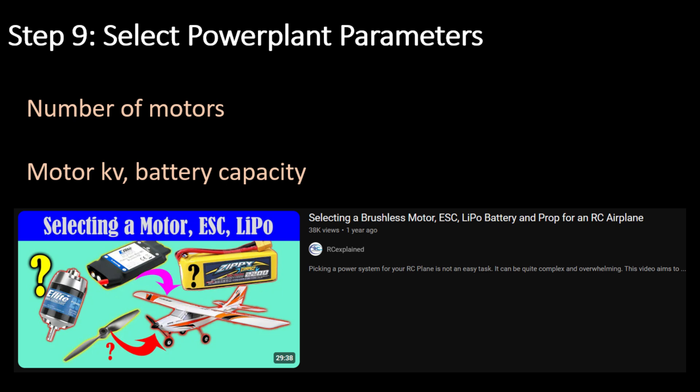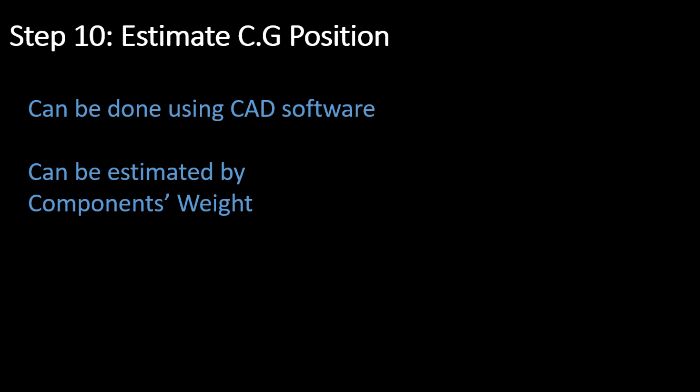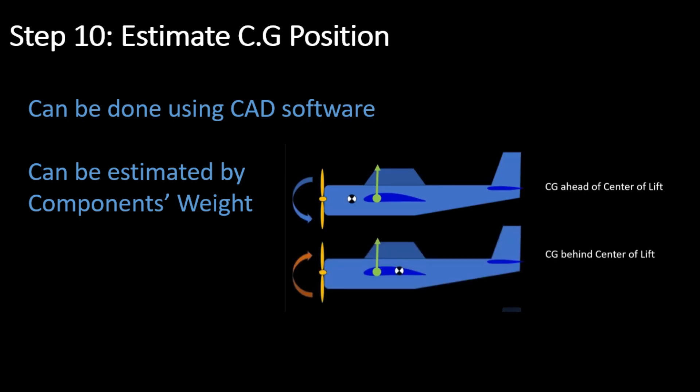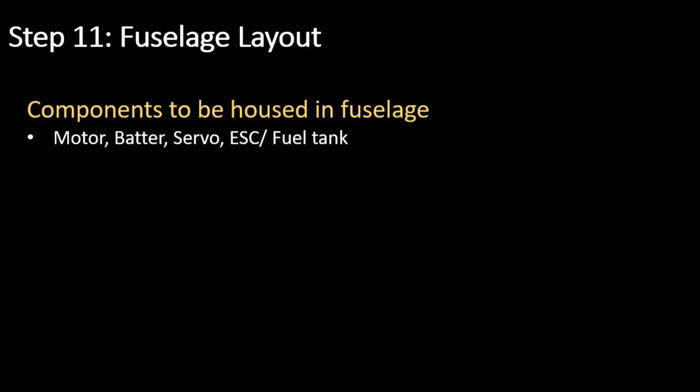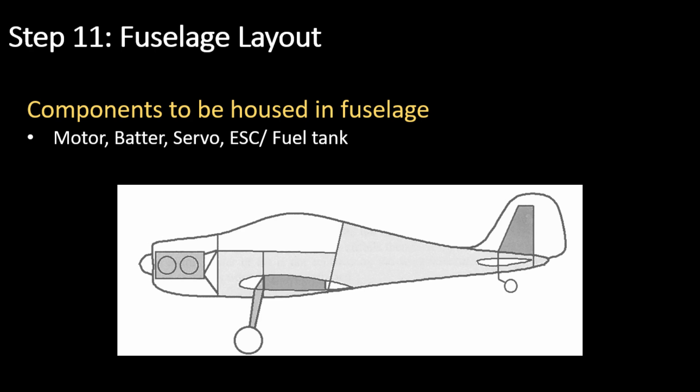Step 10: For the chosen configuration, estimate the center of gravity position. The CG position plays a crucial role in the stability of the airplane. Step 11: Lay out the fuselage, ensuring there's enough room for the various components.